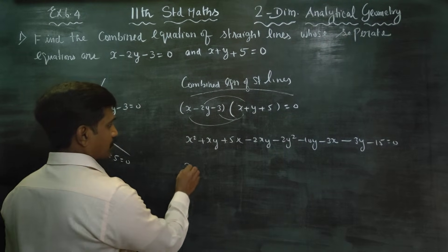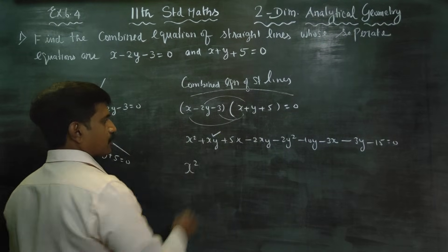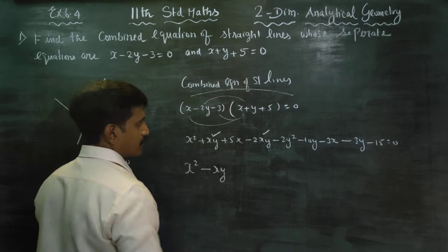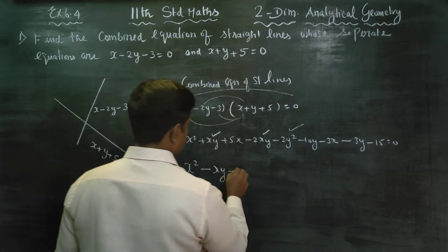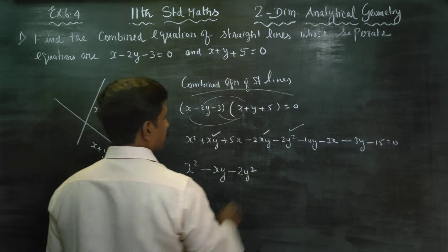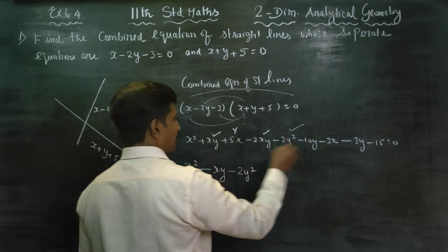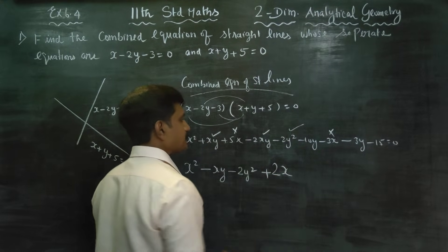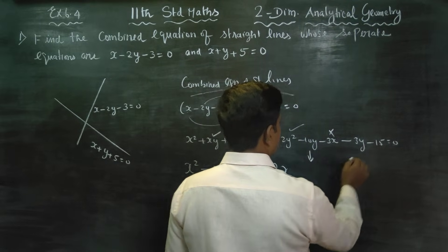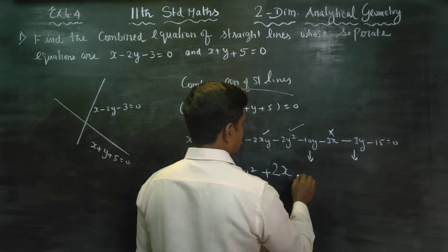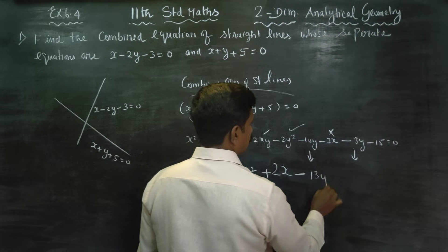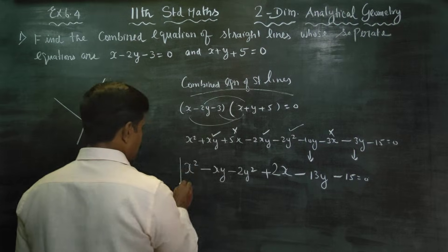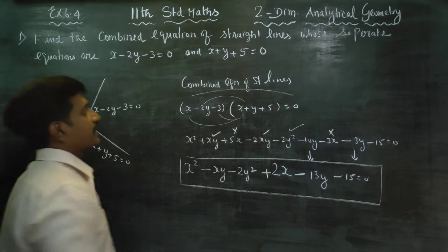Now, collecting like terms — the x squared term, the xy terms, and the y squared terms are grouped together. After collecting all like terms, minus 15 is equal to 0. This is called the combined equations of the straight line.